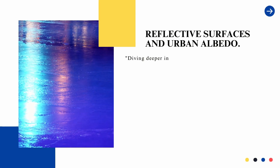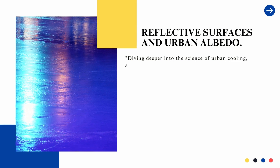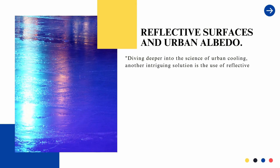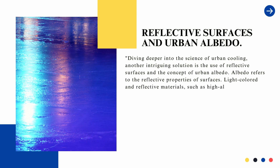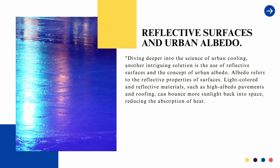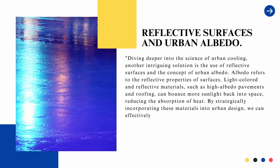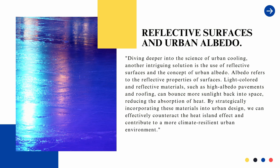Diving deeper into the science of urban cooling, another intriguing solution is the use of reflective surfaces and the concept of urban albedo. Albedo refers to the reflective properties of surfaces. Light-colored and reflective materials, such as high albedo pavements and roofing, can bounce more sunlight back into space, reducing the absorption of heat. By strategically incorporating these materials into urban design, we can effectively counteract the heat island effect and contribute to a more climate-resilient urban environment.